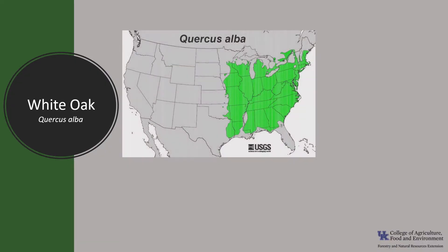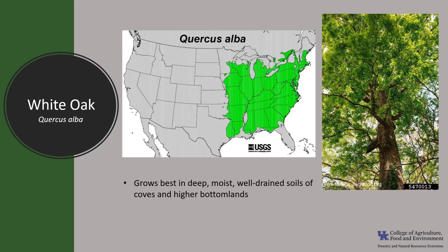White oak is native to the eastern and midwestern United States. It grows in many sites and soil types but grows best in deep moist well-drained soils of coves and higher bottomlands. In the southern Appalachians it exhibits best growth on north-facing slopes and in coves.